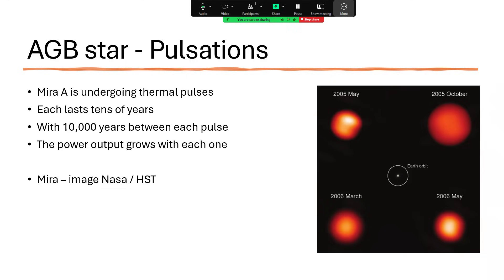I think the image on the right is fantastic with the small, compact, bright orange center bottom right, and the distended, cool, cherry red top right there. Again, you can see the size of it compared to the Earth's orbit.